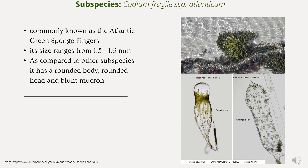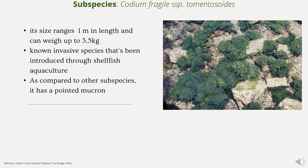Talking about three major subspecies of Codium fragile: the first is Codium fragile subspecies atlanticum, commonly known as the Atlantic green sponge fingers. Its size ranges from 1.5 to 1.6 mm, and compared to other subspecies, it has a rounded body, rounded head, and blunt rhizome.